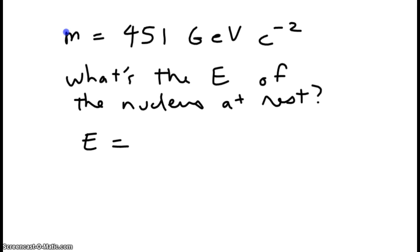Well, energy is M times C squared. For M, what do we plug in? We plug in the value from above. 451 gigaelectron volts times C to the negative 2.